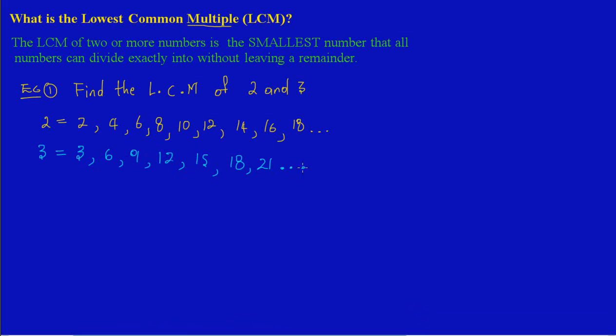Looking at the definition carefully, the LCM of two or more numbers—in this case 2 and 3—is the smallest number that these two numbers can go into without leaving a remainder. Let's search our listings now.